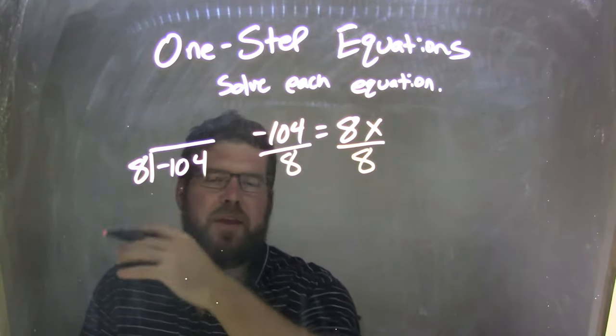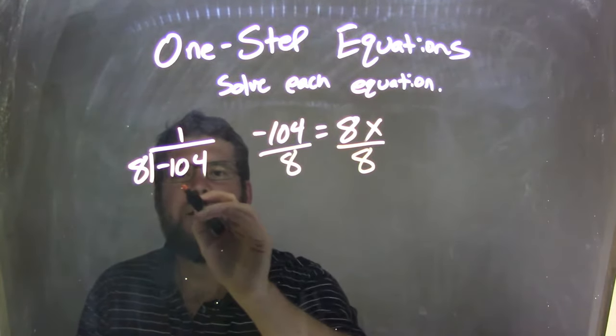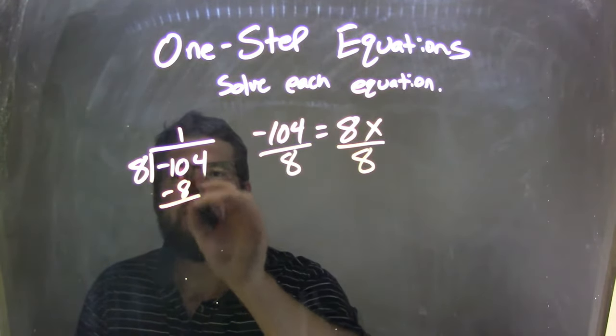8 goes into 1, well, 0 times. Can't do it. So 8 goes into 10 one time, right? 1 times 8 is 8. We subtract to 2. And don't really worry about that negative sign. I guess I didn't want you to put that in there for right now.